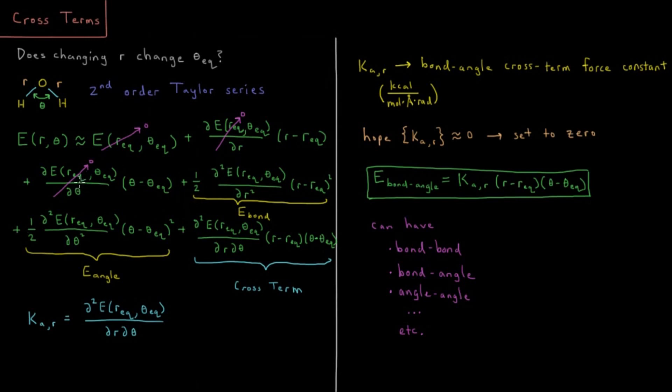Then we have our quadratic terms. So second order in the Taylor series, we have plus one half second derivative of energy with respect to R, times R minus REQ squared. Where this term is basically what we defined to be our bond spring constant, KB. And this is times R minus R equilibrium squared. So this is actually just the energy of our bond as we've defined it in molecular mechanics. Then we have a similar term for the angles. So we have one half second derivative of energy with respect to theta, times theta minus theta equilibrium squared. And analogously, this is just the molecular mechanics angle energy, where this term is the angle spring constant.